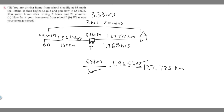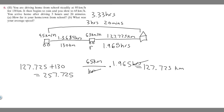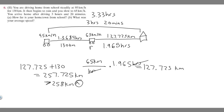We're trying to find the total distance from school to home. We know the first segment is 130 km and the second is 127.725 km, so the total distance is just those added together: 127.725 plus 130 equals 257.725 kilometers. Rounding to a whole number, that's approximately 258 kilometers. That's the answer to Part A — the distance from hometown to school is 258 kilometers.